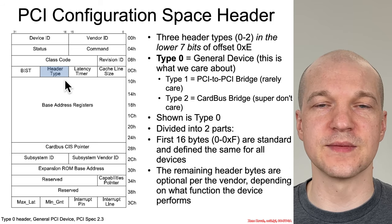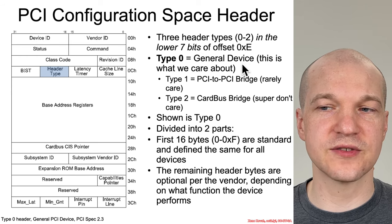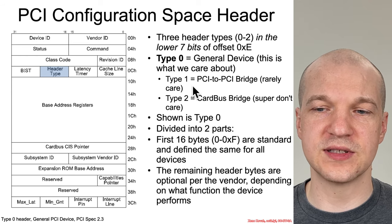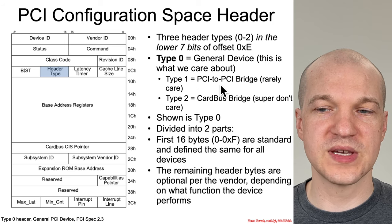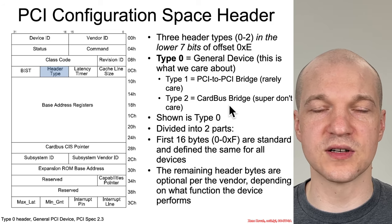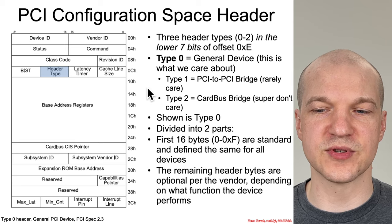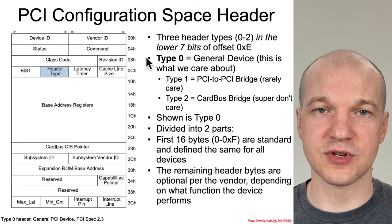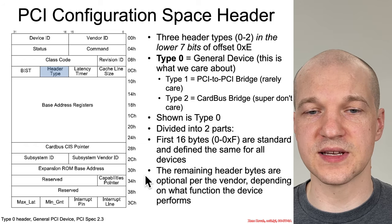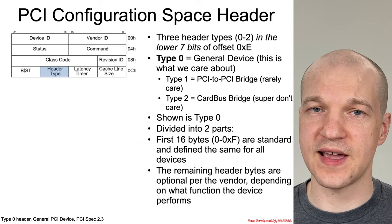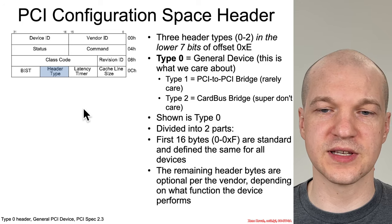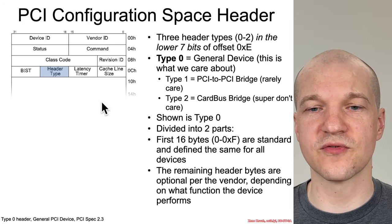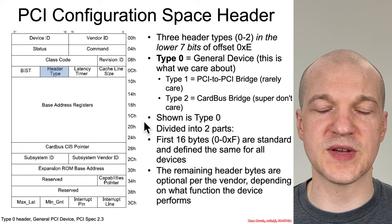If the header type is type zero, it's a general device, and that's usually what we care about. There are also special types one and two for PCI-to-PCI bridges and CardBus bridges, but we don't really care about those most of the time. The first 16 bytes of the header are required, and the rest is optional — a vendor doesn't have to implement anything special in the remaining fields.